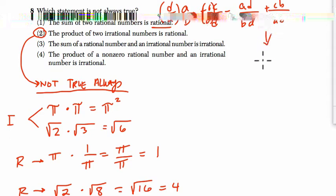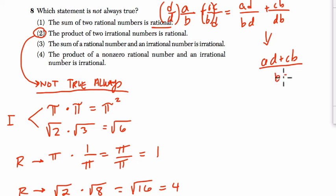If we add this, what do we get? ad plus cb, and then we leave the denominator alone, right, when you're adding fractions, don't touch that. This is still rational, because the product of two rational numbers is rational. The sum of two products that are rational numbers are rational.